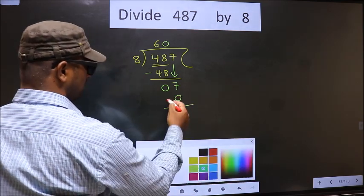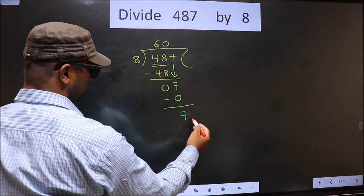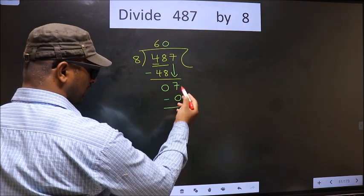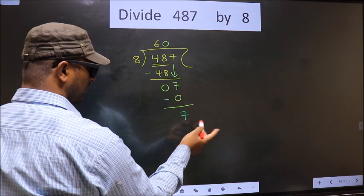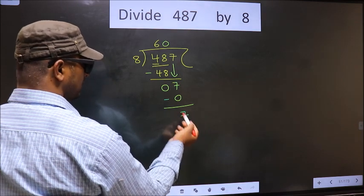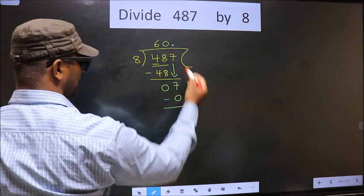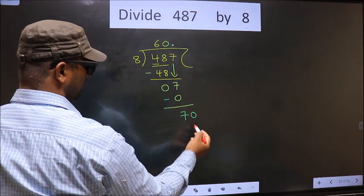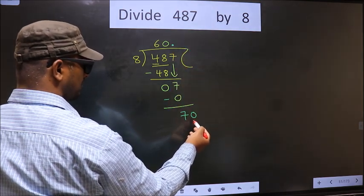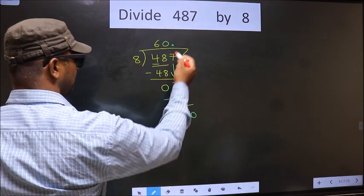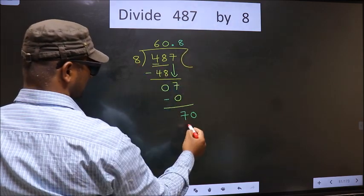Now you subtract 7 minus 0, 7. Now here we did not bring any number down. And 7 is smaller than 8. So now you put a dot and take 0 here. Here we have 70, a number close to 70 in 8 table is 8 8s, 64.